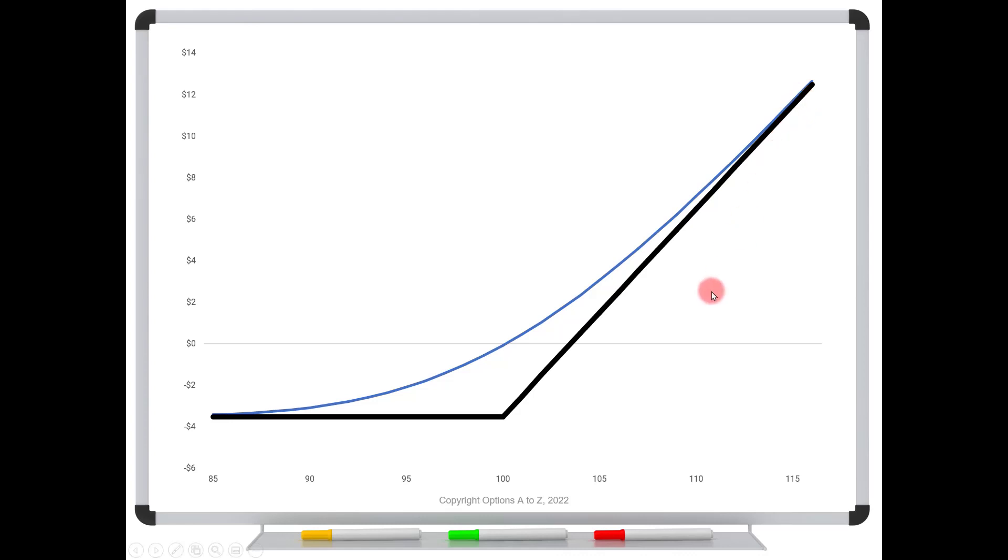Now on the other side, notice that if the stock falls below $100 at expiration, it was completely worthless on this black line. Prior to expiration, that's not true.